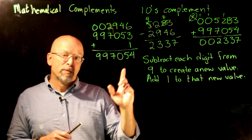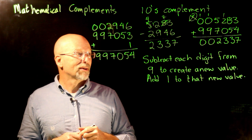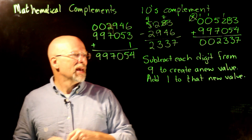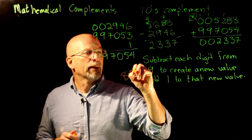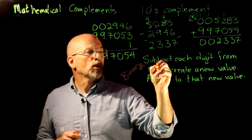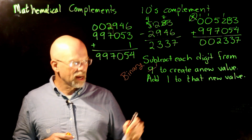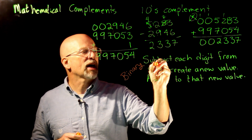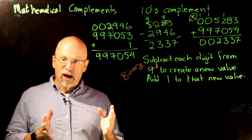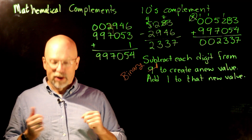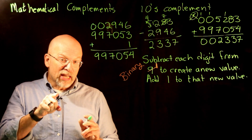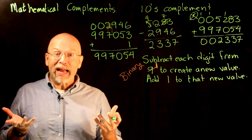It turns out this works with binary too — there's just one minor change. To make this work for binary, I need to change that 9 to a 1. That's the only thing. By changing that 9 to a 1, we'll be able to find the complement of our binary value.